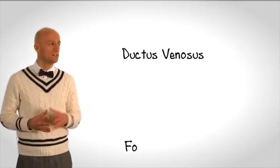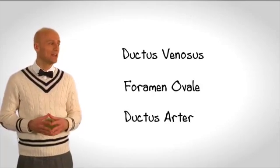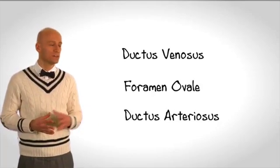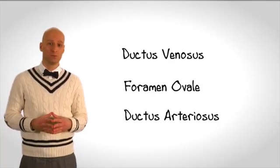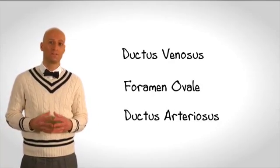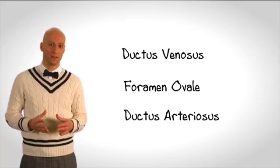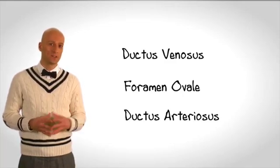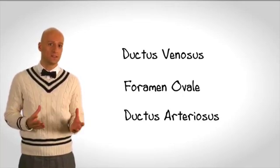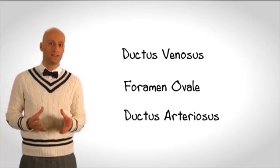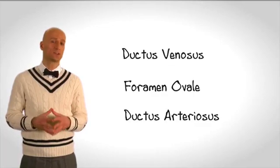These three structural adaptations — the ductus venosus, the foramen ovale, and the ductus arteriosus — are essential to proper fetal functioning. The physiological differences between the fetus and the adult necessitate these structural differences.